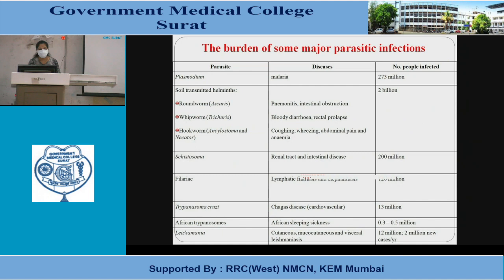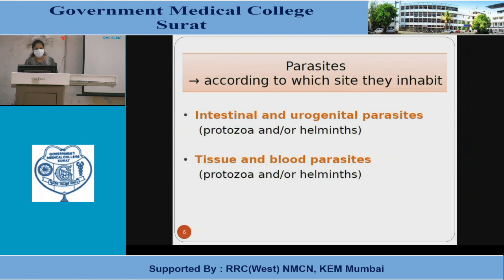The burden of some major parasitic infections: Plasmodium causes malaria. Roundworm causes pneumonitis and intestinal obstruction. Whipworm causes bloody diarrhea. Hookworm causes coughing, wheezing, abdominal pain and anemia. Schistosoma causes renal tract and intestinal diseases. Filaria causes lymphatic filariasis and elephantiasis. Trypanosoma cruzi causes Chagas disease. African trypanosomes cause African sleeping sickness. Leishmania causes cutaneous, mucocutaneous and visceral leishmaniasis.